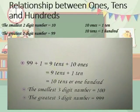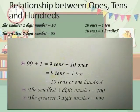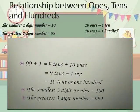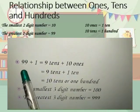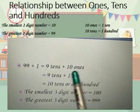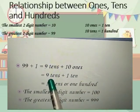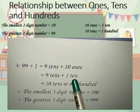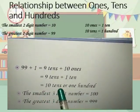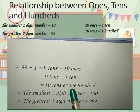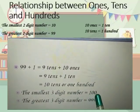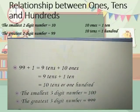99 can be written as 9 tens and 9 ones. But if we add 1, then it becomes 9 tens plus 10 ones. That means 9 tens plus 1 ten. We call 10 tens as 100 and write it as 1, 0, 0 — 100.